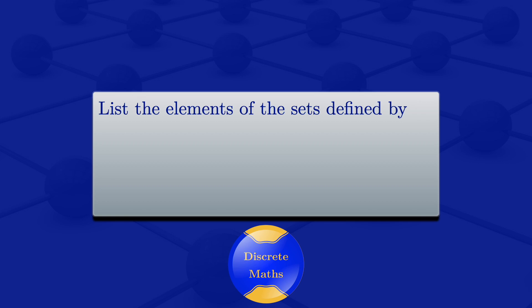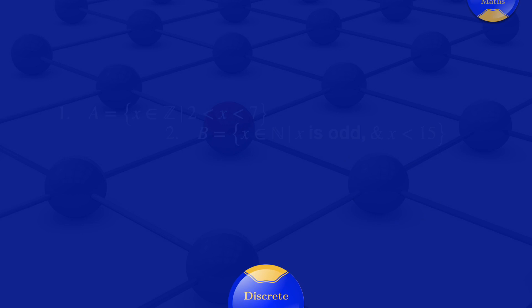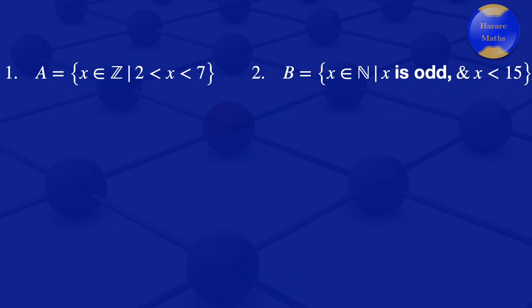In this video, I'm going to list the elements of sets defined by set-builder notation. Set A is the set of elements x which are integers such that x is greater than 2 but less than 7. For set B, we have elements x which are natural numbers such that x is odd and x is less than 15. Those are the two set definitions.